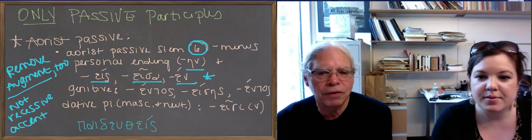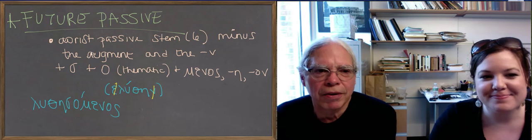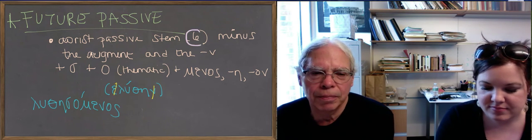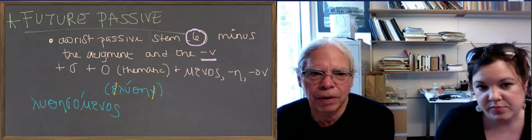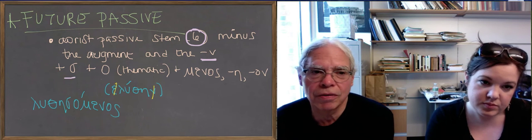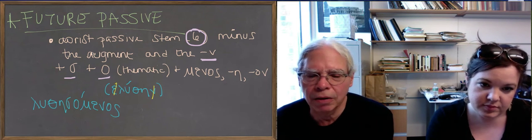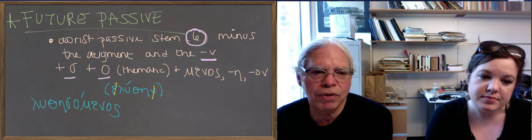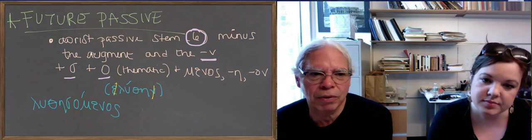Okay, now we're going to look at the future participle form. So, now we're looking at the future passive forms. And with them, you will also begin with the last principal part, the aorist passive form, number six, minus the augment. And the nu, that's part of that form. And what you do is you add an s, which is the sign of futureness, the o thematic vowel, which is the thematic vowel for participles. And then the suffix, menos, mene, menon. So, again, these future passive forms have the sign of the future and then they have what look like middle endings.